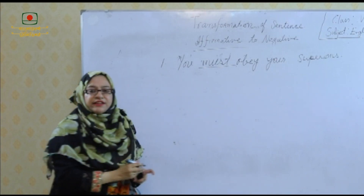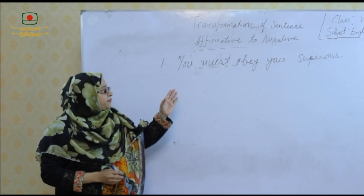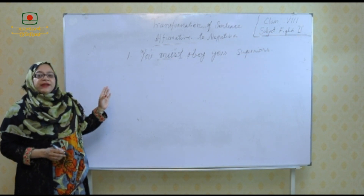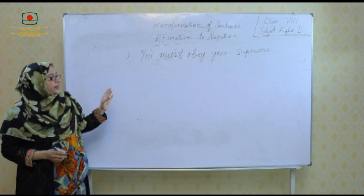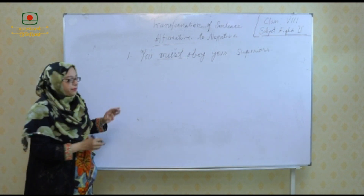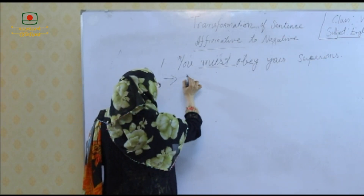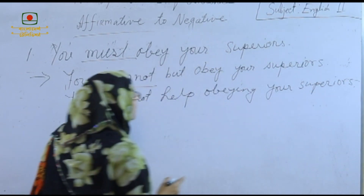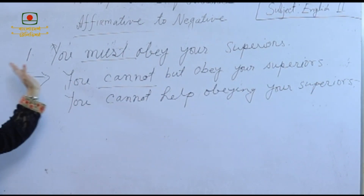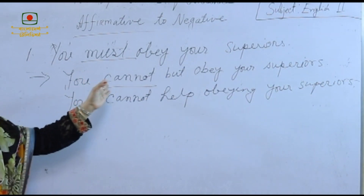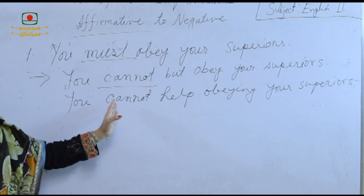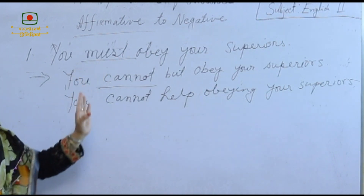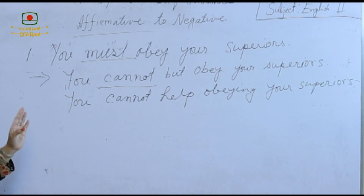If there is 'must' in an affirmative sentence, then we use 'cannot but' or 'cannot help but + ing' to turn it into negative. We use 'cannot but' or 'cannot help but + ing' instead of 'must' when we turn it into negative.